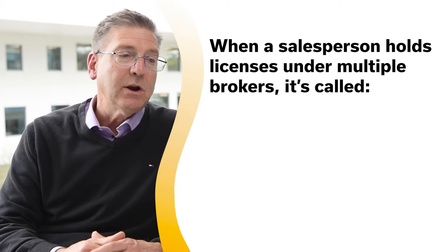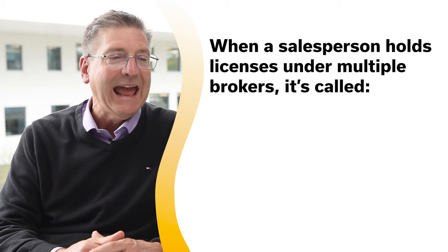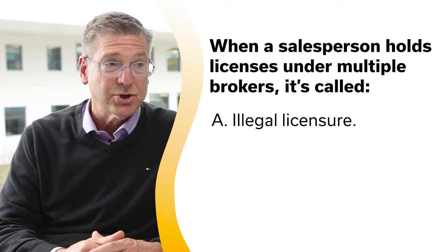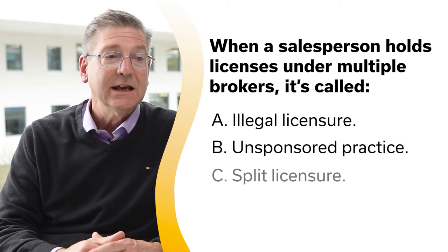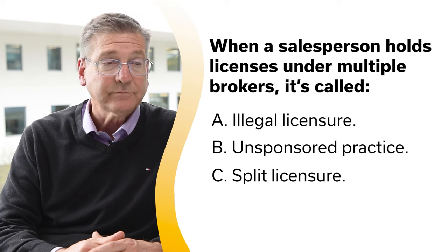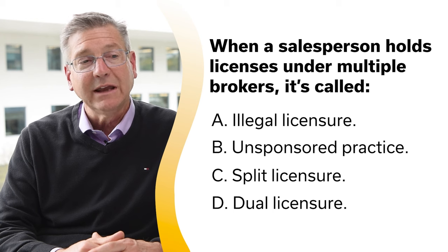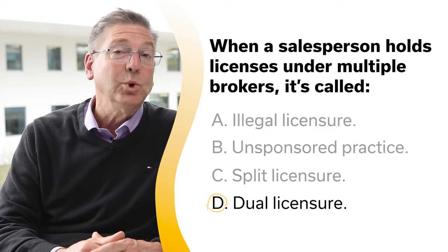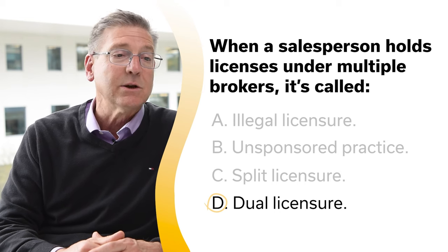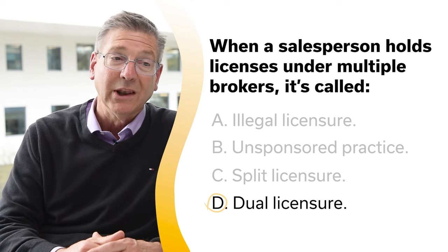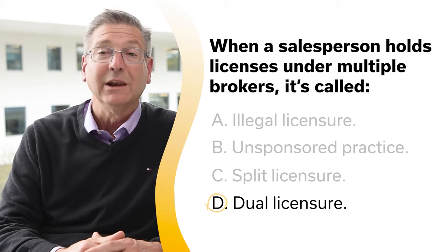When a salesperson holds licenses under multiple brokers, it's called: A, illegal licensure; B, unsponsored practice; C, split licensure; or D, dual licensure. The correct answer is D, dual licensure. When a broker holds multiple New York licenses or a salesperson holds licenses under multiple brokers, it's called dual licensure.